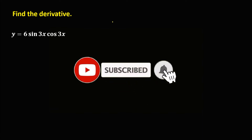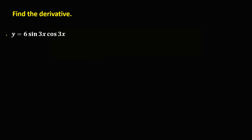Welcome to MathStoria. Let's find the derivative given y equals 6 sine 3x times cosine 3x. Observe that on this given, there is a double angle identity: 2 sine a cosine a equals sine 2a.